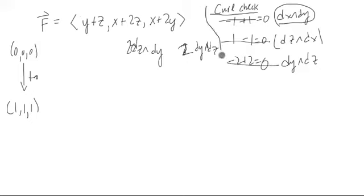So, curl check. Yes, we should be guaranteed to have a potential function. Now, in general, we don't really have to do a curl check. That was just instructional, so we can see when the curl is equal to zero, or you call it the exterior derivative, or whatever you want to call it, of the differential one form represented by this vector field.